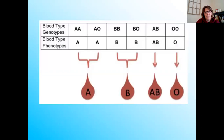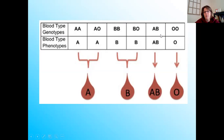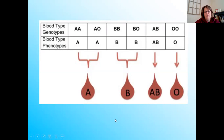We'll do some genetics problems with this, so take a minute and write this down. If we look at this table, we see that if you are type A blood — the phenotype meaning the physical expression — you can either have two dominant alleles or the A and then the recessive O. If you're type B, you can have two B alleles or the B dominant and the recessive O. If you're type AB, you have both A and B alleles and they're codominant, so both of them show up together. And if you're type O, you have two recessive alleles in your genotype. That's a breakdown of the genotypes and phenotypes for blood types.